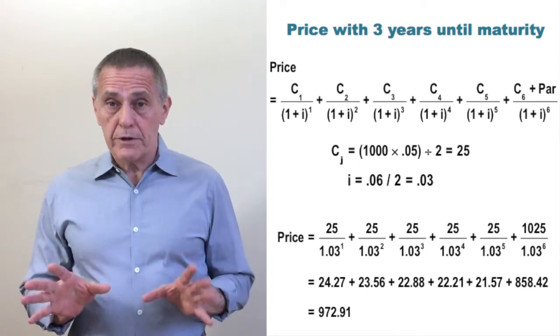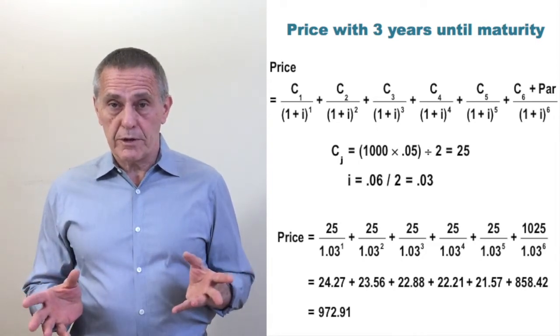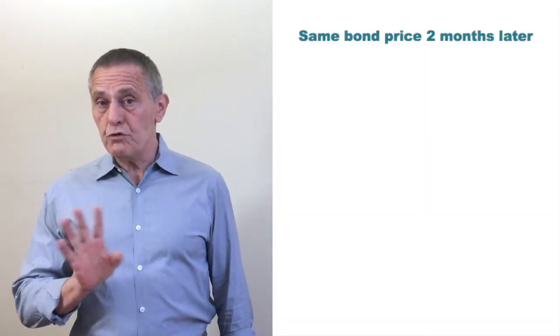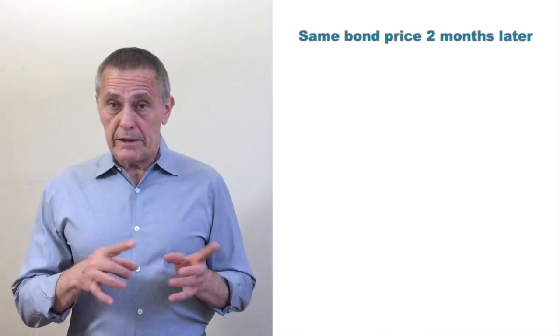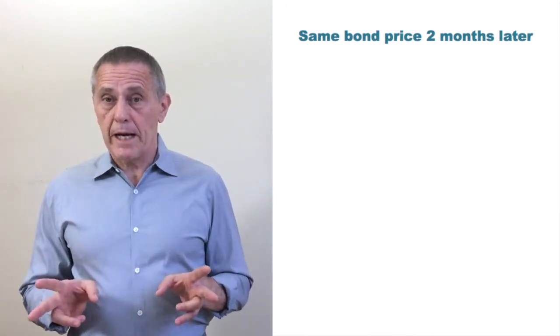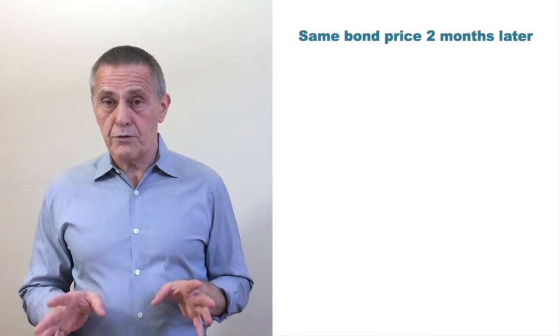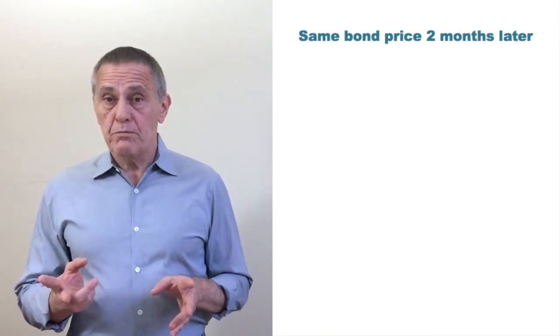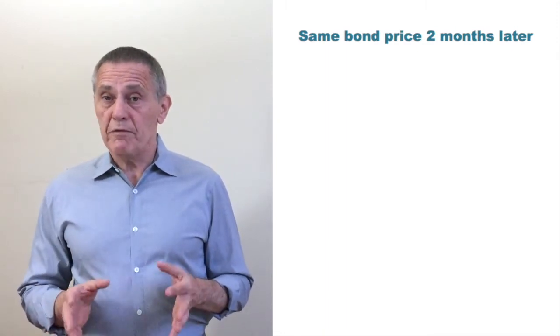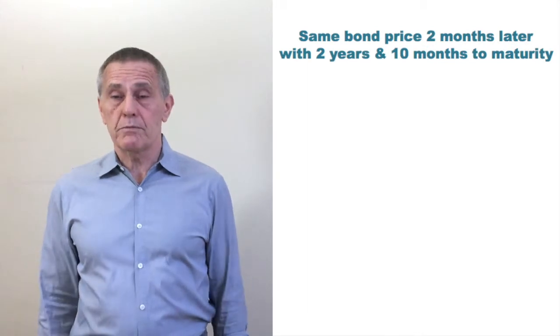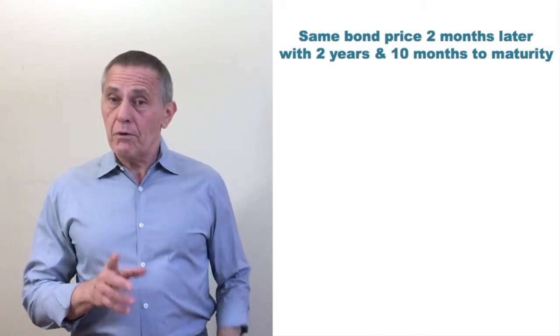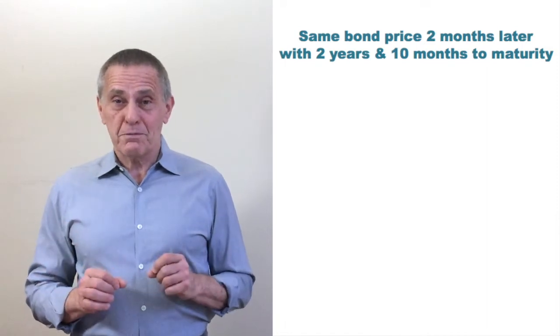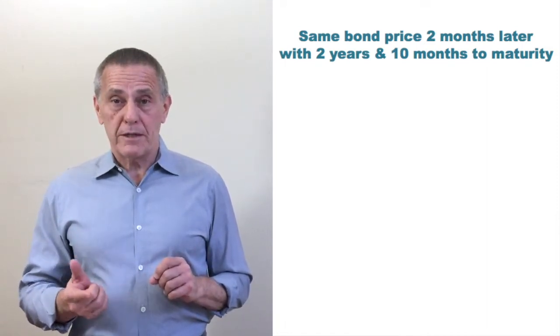But now let's consider an alternate scenario using the same security. Let's say we have the same three-year bond, but it's two months forward in time. So in other words, what in that last example was a three-year bond, that is a bond with three years to maturity. After two months, that same bond would have two years and 10 months remaining to its maturity. But let's say that bond is again, or perhaps still, trading at 6% yield to maturity. What would be its price?